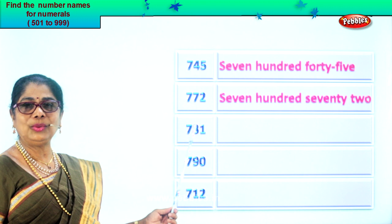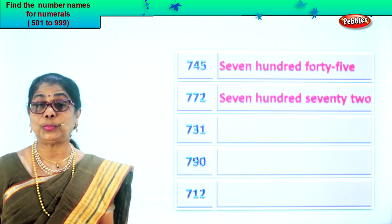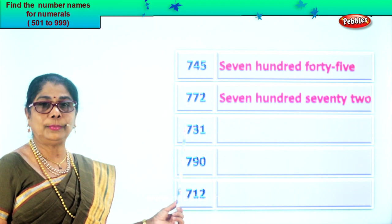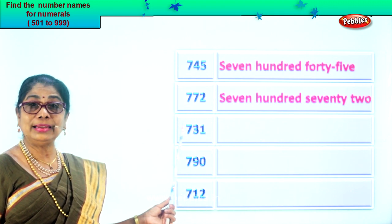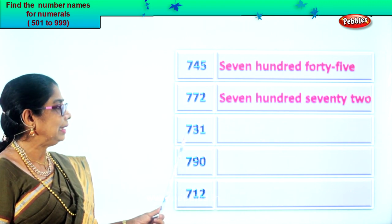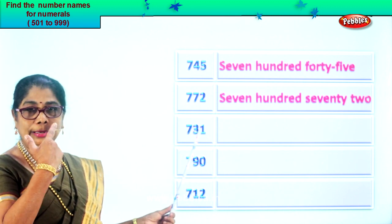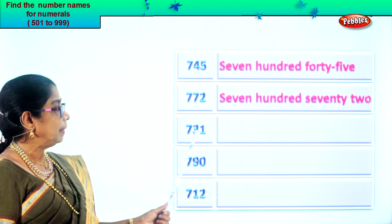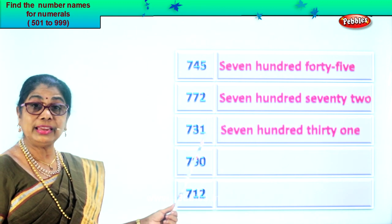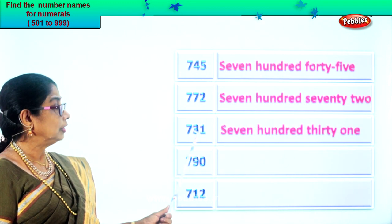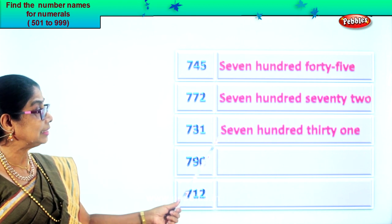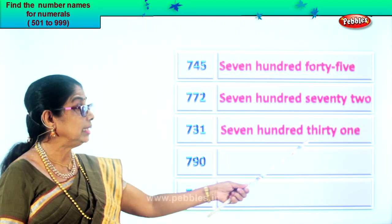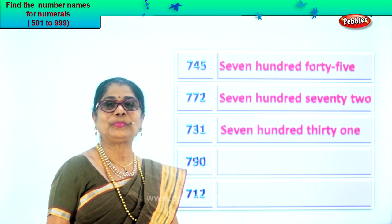Let's take this numeral: seven, three, one. One in the ones place, three in the tens and seven in the hundreds place. Seven hundred thirty-one. Read it again: seven hundred thirty-one. Now what do we do? We write seven hundred first, then we write thirty-one. Good.